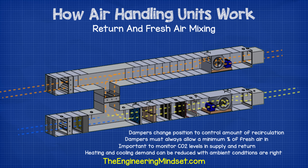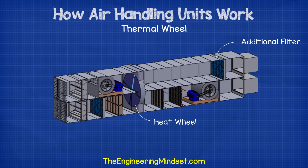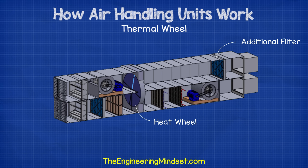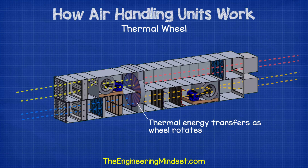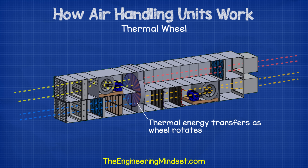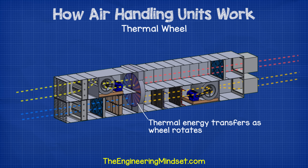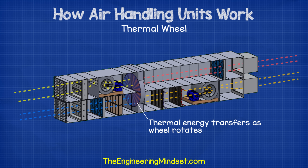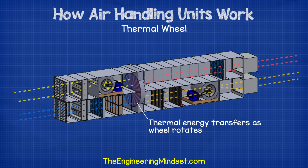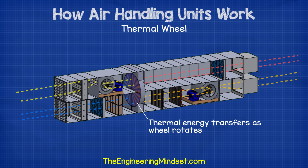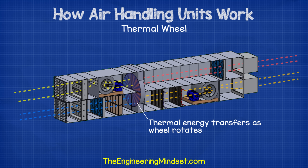Another variation we might come across is the heat wheel — this is very common in newer compact AHUs. This uses a large rotating wheel; half of it sits within the exhaust air stream and half within the fresh air intake. The wheel rotates driven by a small induction motor. As it rotates, it picks up unwanted heat from the exhaust stream and absorbs this into the wheel's material. The wheel then rotates into the fresh air intake stream — this air is at a lower temperature than the exhaust stream, so the heat transfers from the wheel into the fresh air stream, which heats the incoming air and reduces the demand on the heating coil. This is very effective, but some air will leak from the exhaust into the fresh air stream, so this cannot be used in all buildings.